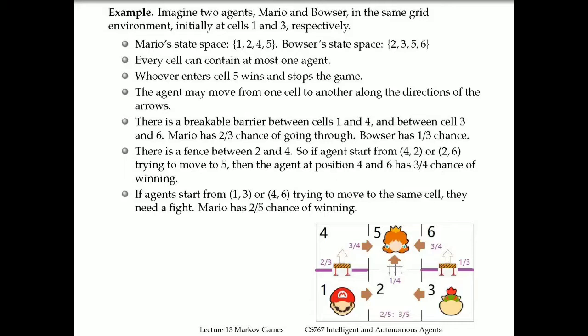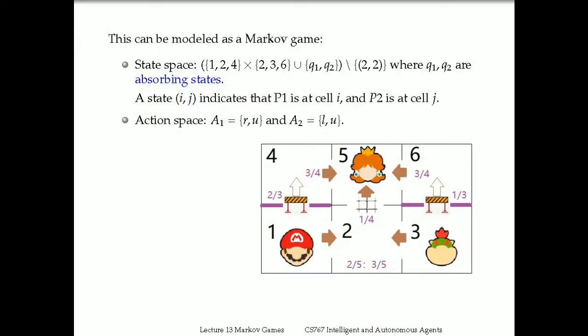We want to model this situation as a Markov game, so we identify the state space. The states are not just one through six because we have two agents—we need a state capturing the location of both agents. For Mario, his position can be one, two, or four (excluding five since that's terminal). For Bowser, the position space is two, three, or six. The global state of the environment will be a pair of positions: one for Mario and one for Bowser, giving us the Cartesian product {1,2,4} × {2,3,6}.